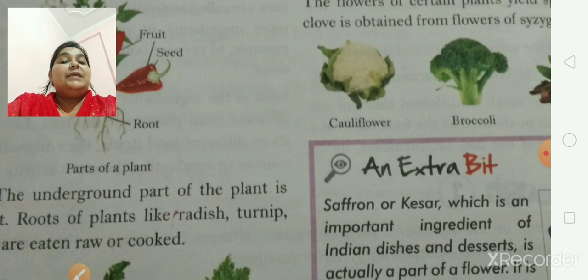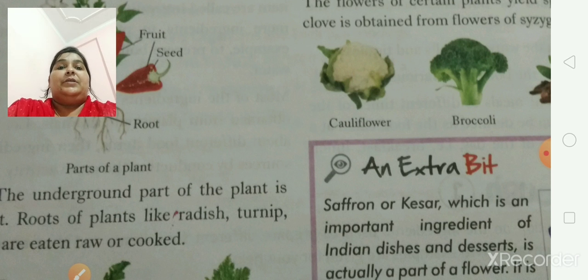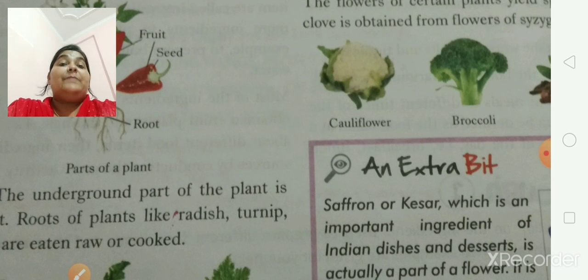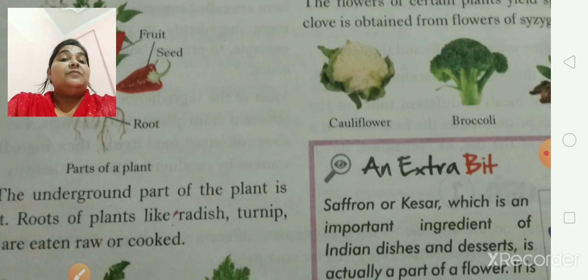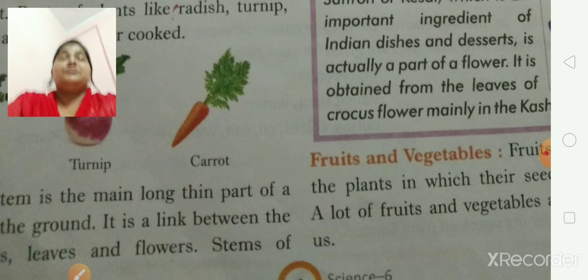Raw, for example, in salad you can eat radish, tomato, cucumber, carrot. Cooked means we used to cook with spices, salt, and oil — then it becomes a delicious food to have. With the diagrams you can understand these are the foods.